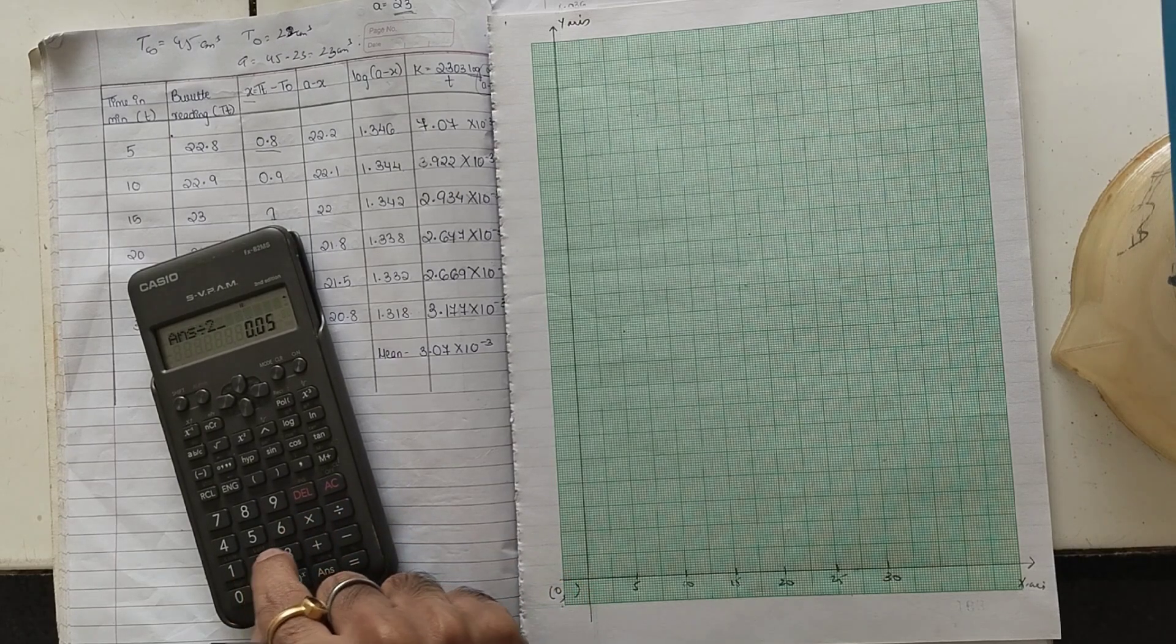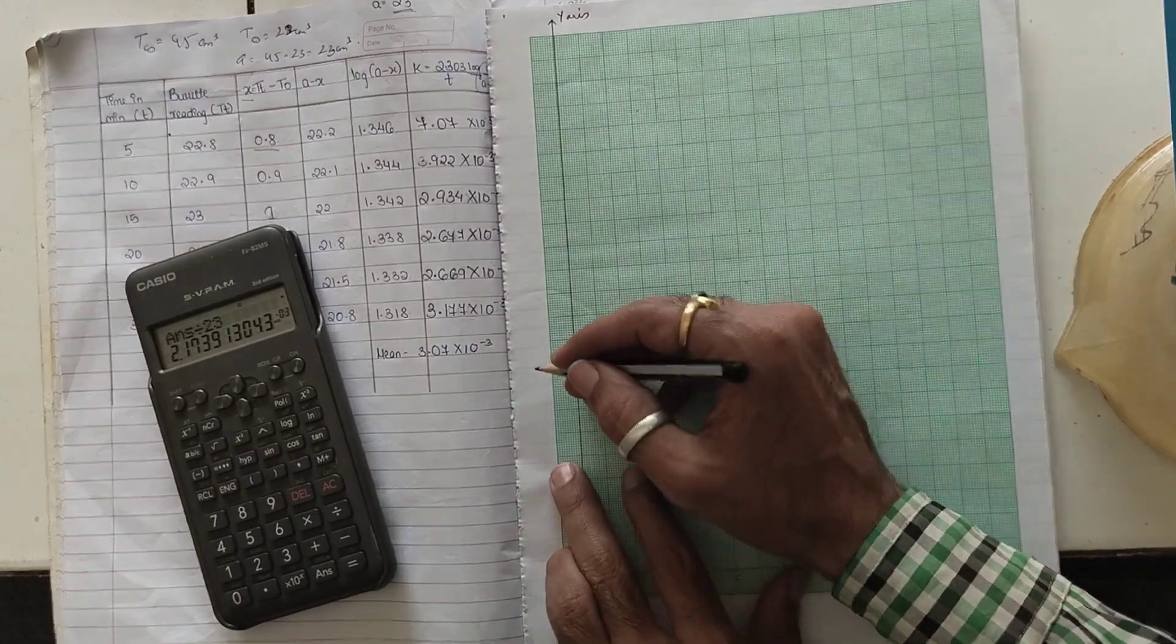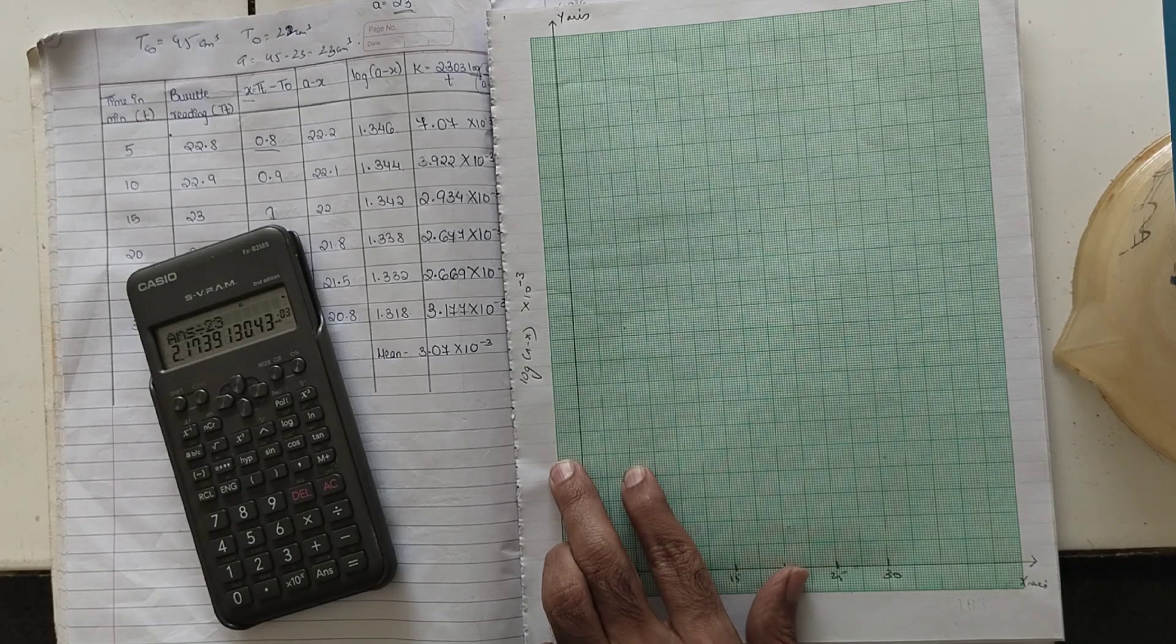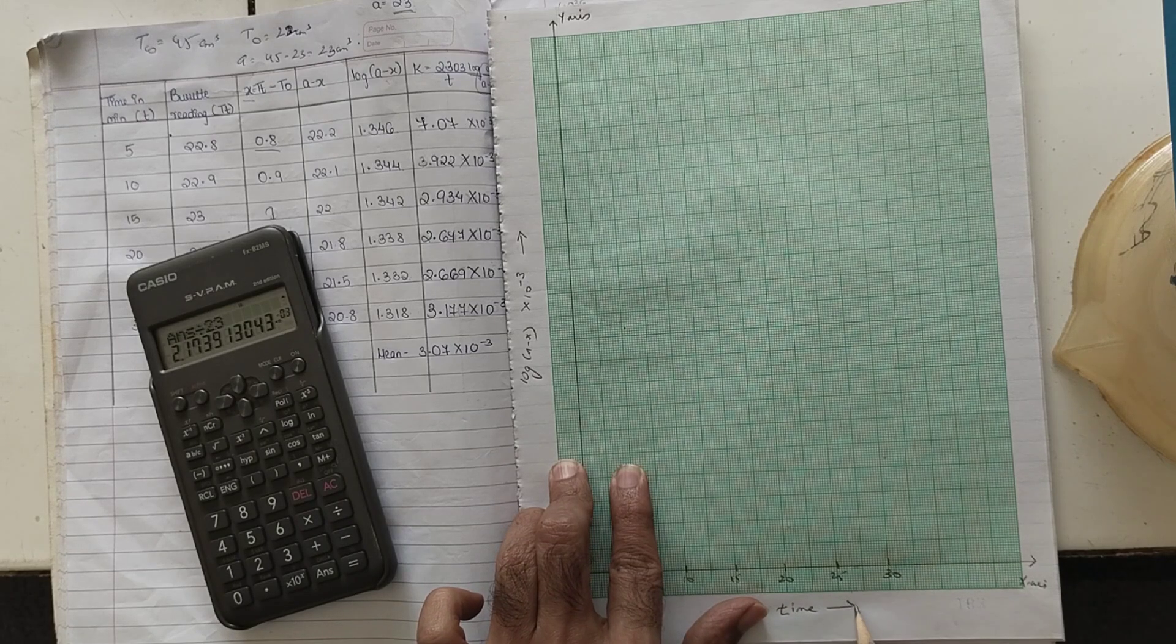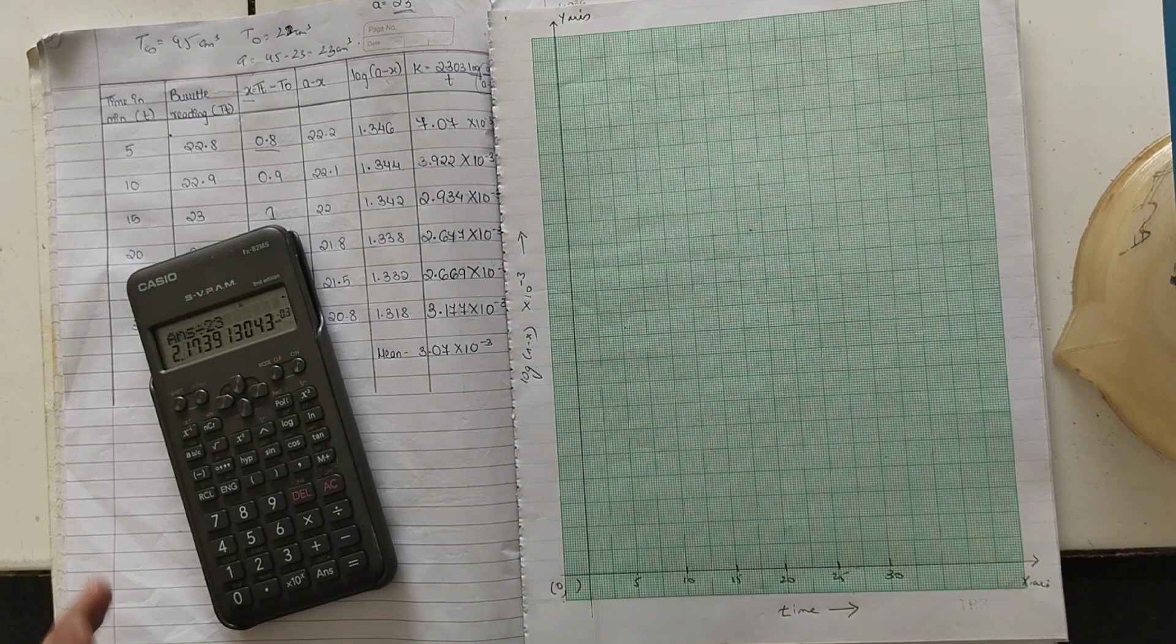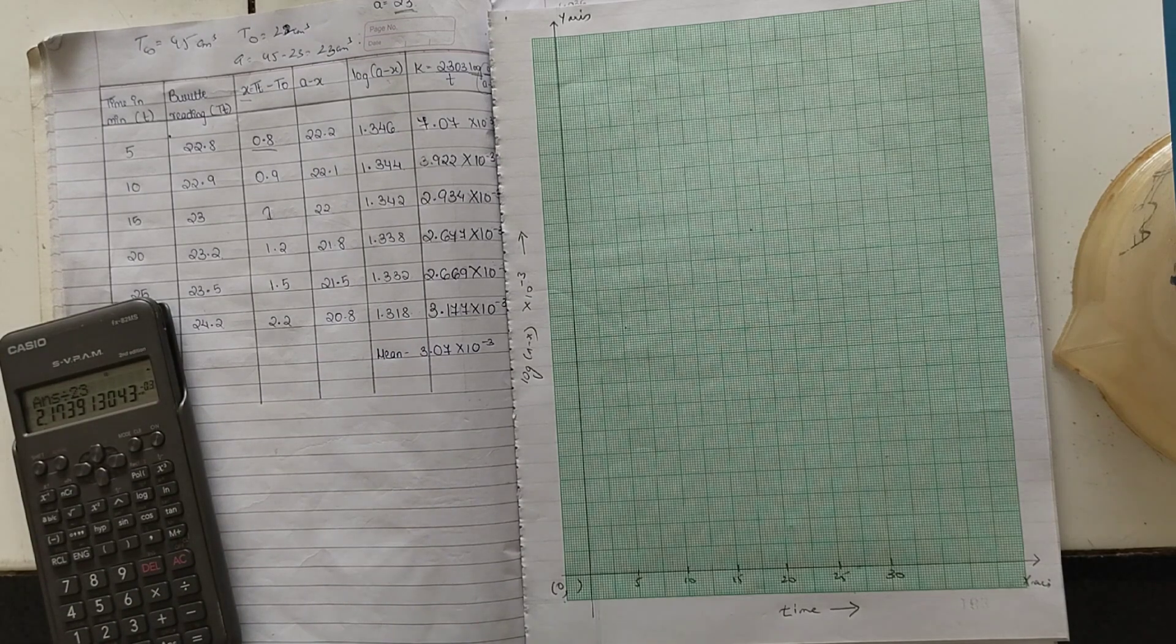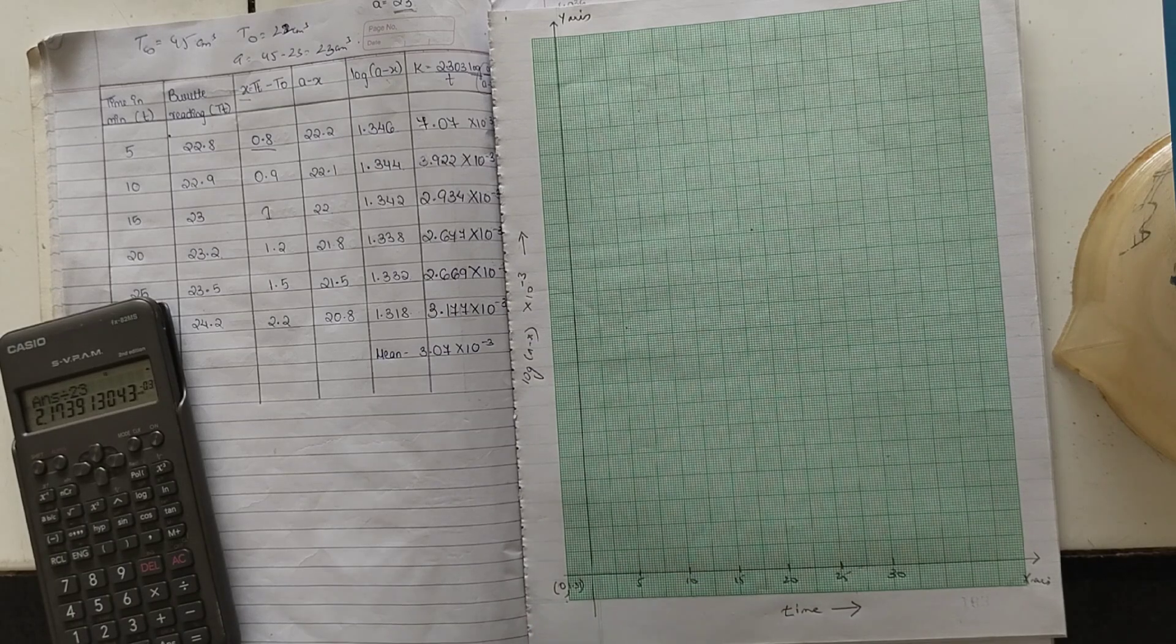The range that we have is 1.35 minus 1.30, this is 0.05, and total squares that we have are 23, so we divide it by 23. When we divide it by 23, we get 2.17 in 10 raise to minus 3. So every square we are going to keep it as 2.17, and we are going to keep 10 raise to minus 3 as common. So log A minus X multiply by 10 raise to minus 3, this is common.